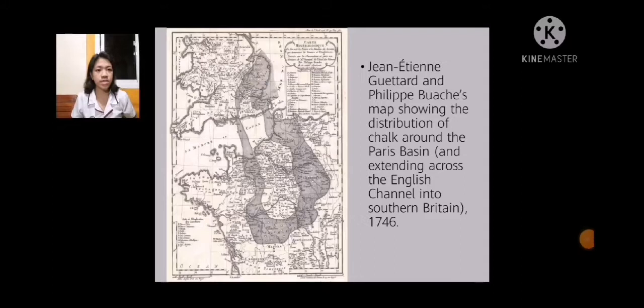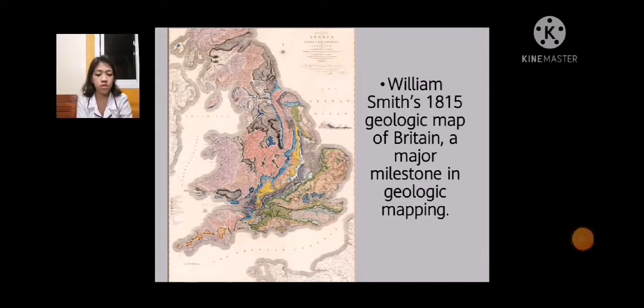As you can see on your screen, this was the first geologic map. John Ettinggala and Philip maps showing the distribution of chalk around the Paris Basin and extending across the English Channel into Southern Britain in the year of 1746. However, it was still an important milestone. This map summarizes in a single image a large amount of geologic information about the region. It shows for the first time the distribution of a single unit across space. This map is an important milestone, but it's not what most geologists would instantly recognize as a geologic map, because it emphasizes just one unit, excluding all others, and because it uses only one color, and as you can see, it's only black and white.